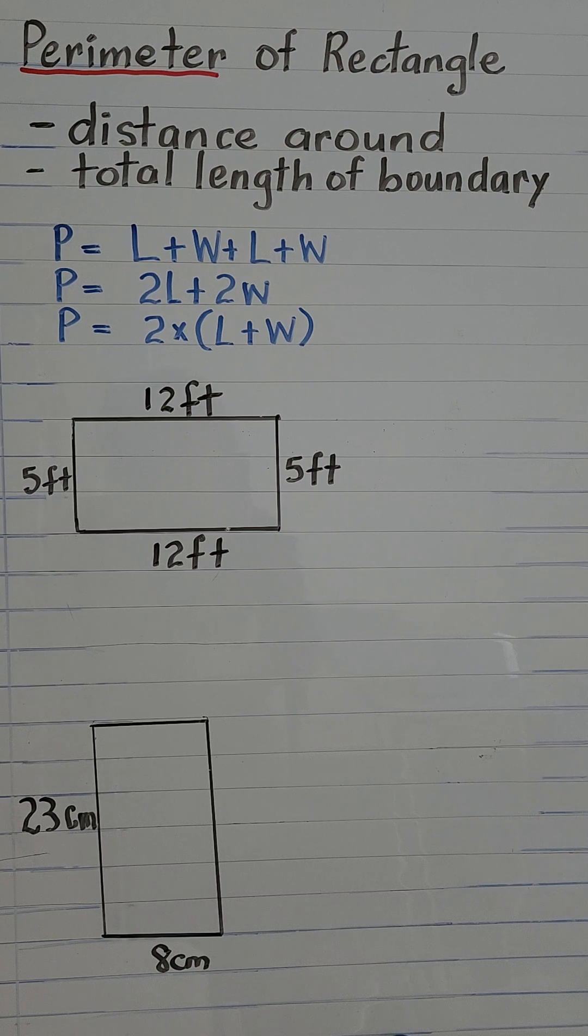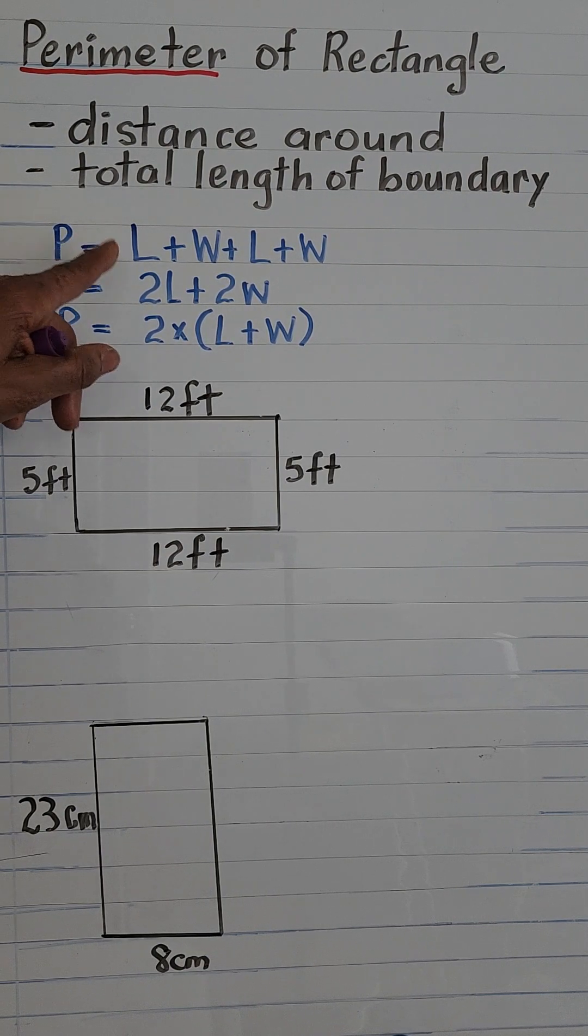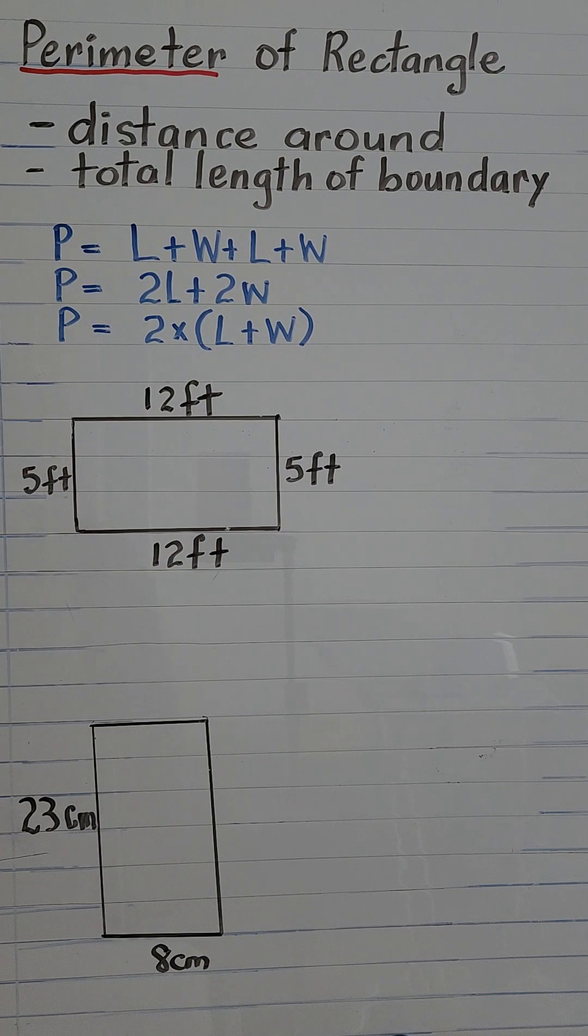Welcome to Perimeter of Rectangle, fifth grade maths. Perimeter means the distance around or the total length of the boundary, and I have three ways here you can find the perimeter of a rectangle and you will get the same answer.